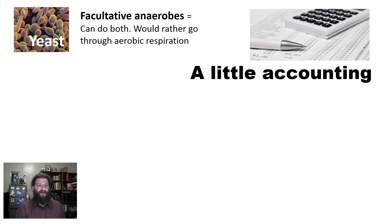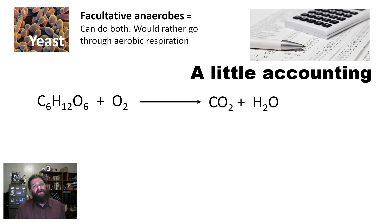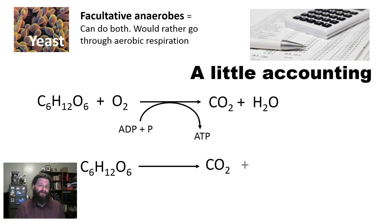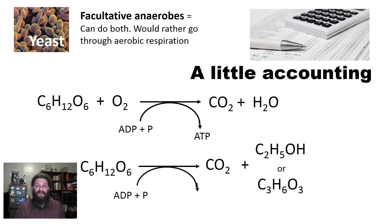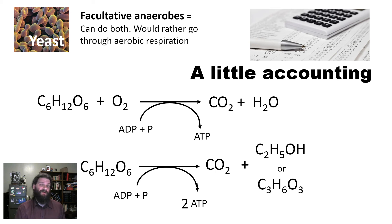Why would yeast really want to go through aerobic respiration rather than anaerobic respiration? The proof lies in a little accounting. If we look at aerobic respiration and the ATP produced and compare that to anaerobic respiration — either pathway, whether alcoholic or lactic acid fermentation — both yield energy. But when we go through alcoholic fermentation, the yeast is only producing two ATP molecules per glucose molecule. Compare that to aerobic conditions: that's 36 ATP molecules per glucose. I'd much prefer to earn 36 bucks an hour than two bucks an hour. So we have to force the yeast to do work for only two ATP per glucose.